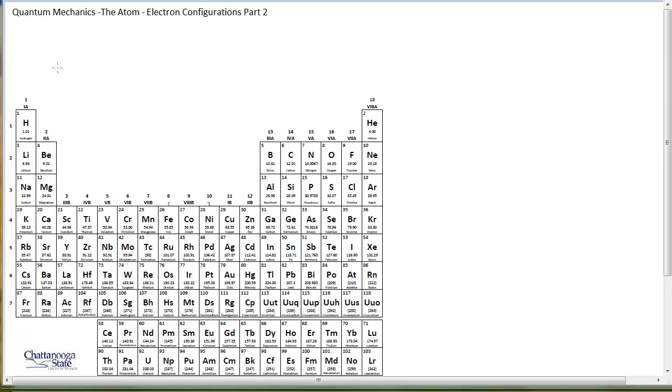Alright, so we can write an electron configuration for anything on the periodic table just by following along the boxes, essentially left to right, top to bottom. For example, if we wanted to write the electron configuration for selenium, we would find it in the periodic table, it's right here.